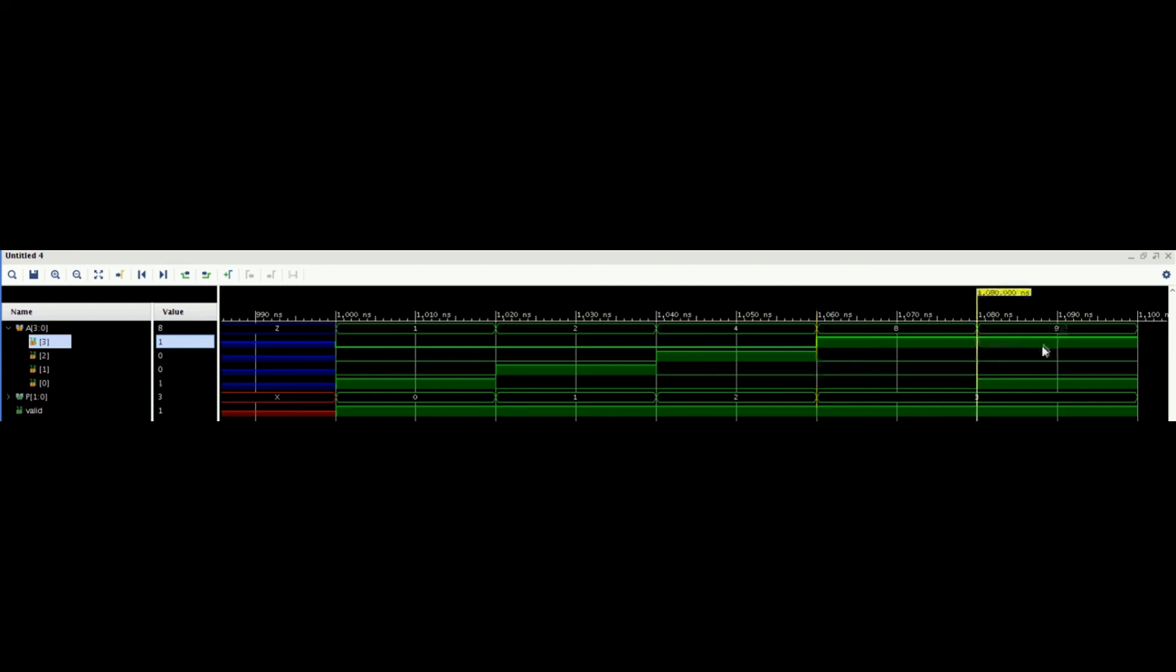Now here I have given one input: A3 as high and A0 as high. As we know, A3 is a high priority bit, so in index we are getting 3 only. So here 3 continues along with the valid.